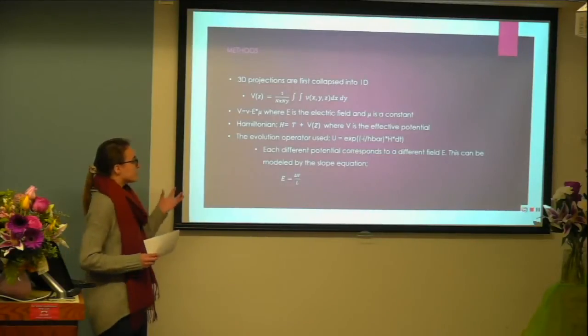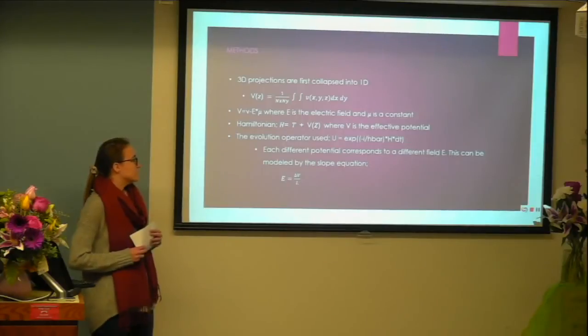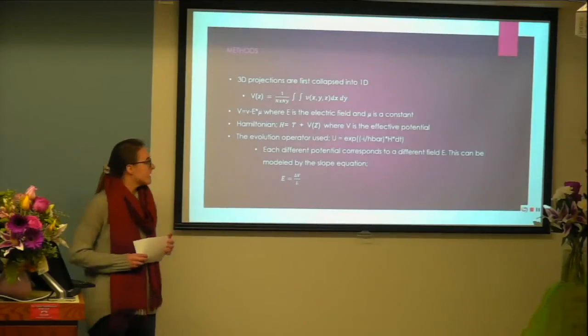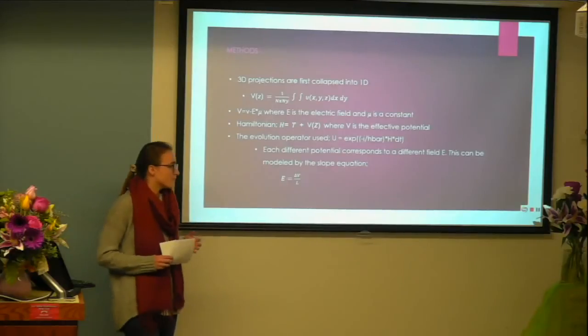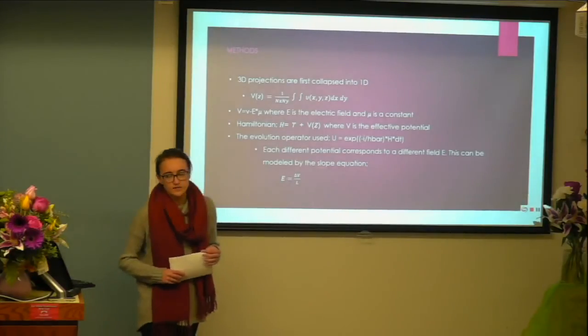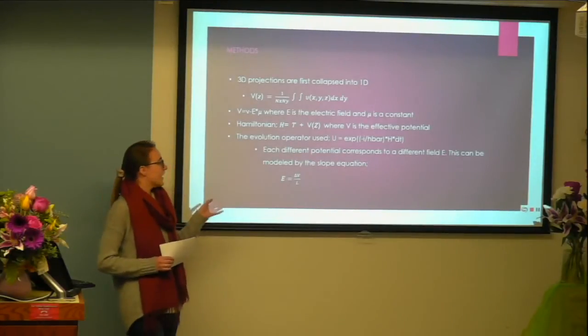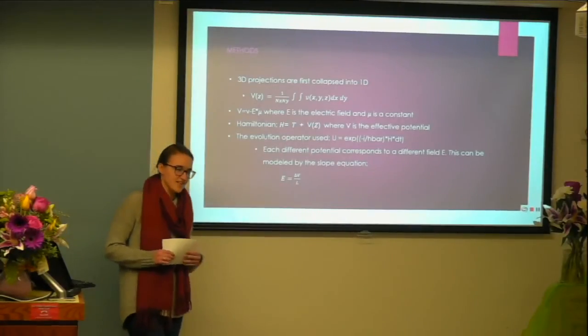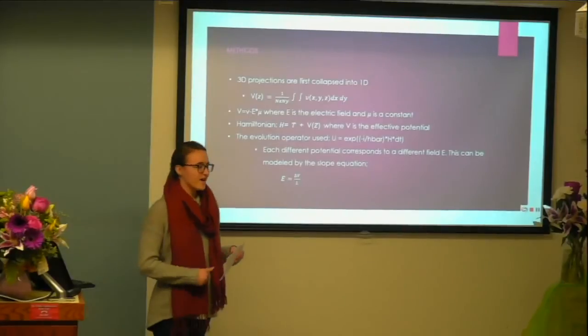Our Hamiltonian is going to be used as well in order to calculate our evolution operator, and so that Hamiltonian is also dependent on our potentials. We're going to notice a dependence of our probability of finding the electron in a specific space is going to be dependent on our applied potential.